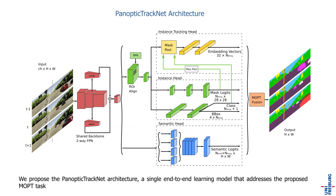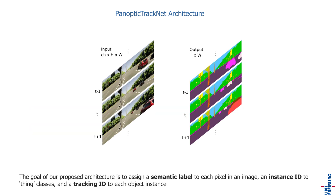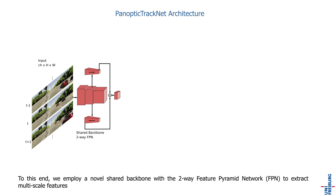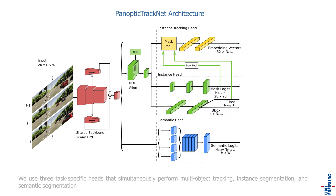We propose the Panoptic TrackNet architecture, a single end-to-end learning model that addresses the proposed MOPT task. The goal of our proposed architecture is to assign a semantic label to each pixel in an image, an instance ID to thing classes and a tracking ID to each object instance. To this end, we employ a novel shared backbone with a two-way Feature Pyramid Network to extract multi-scale features. We use three task-specific heads that simultaneously perform Multi-Object Tracking, Instance Segmentation and Semantic Segmentation.